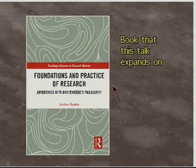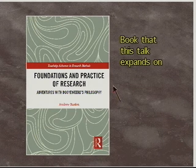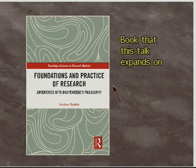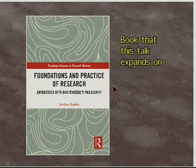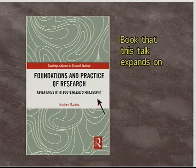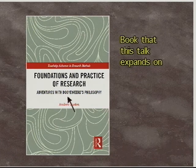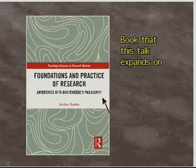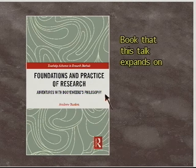Dooyeweerd's Philosophy is little known, but I've spent the last 25 years investigating it in relation to research, especially in information systems, sustainability, and perhaps business. It's an unusual philosophy and comes at things from a new angle. In this book there are a lot of new approaches to research, including the idea that we can address all kinds of research in all kinds of fields. That is mentioned in the book and there's a table of fields against aspects. This talk expands on that.